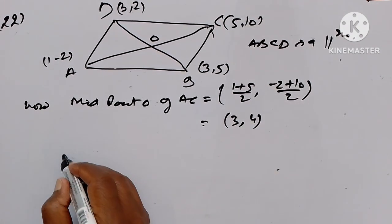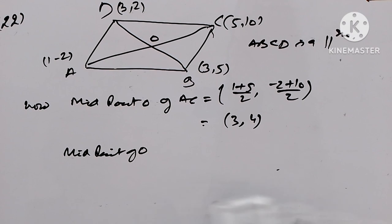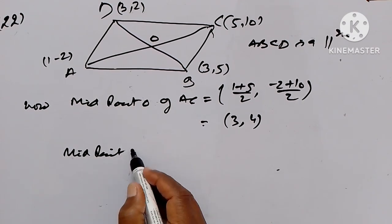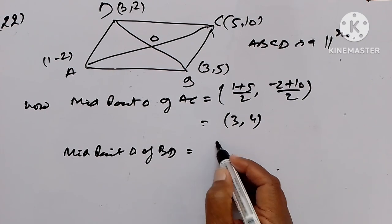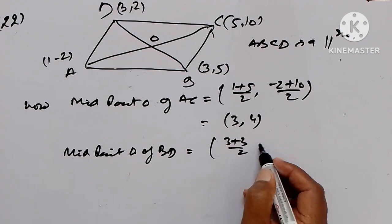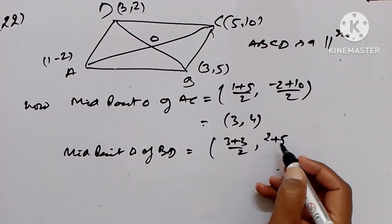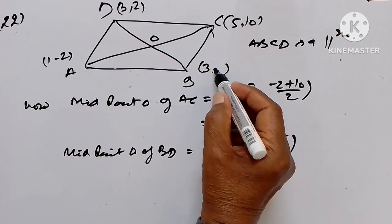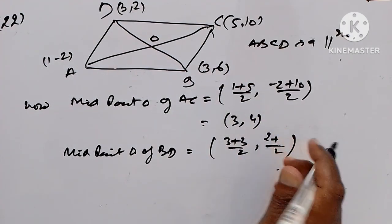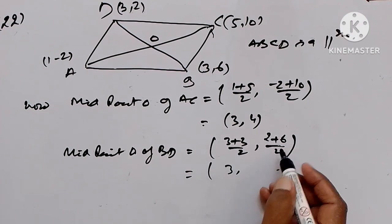Similarly, midpoint O of BD is equal to (3+3)/2 and (2+6)/2 — correcting from 5 to 6 — which equals 3+3 upon 2 = 3, and 8 upon 2 = 4. So the midpoint of BD is also (3, 4).